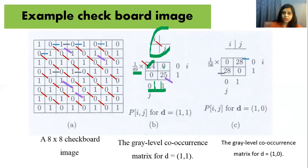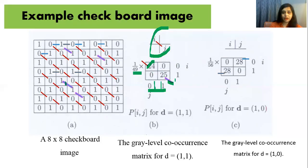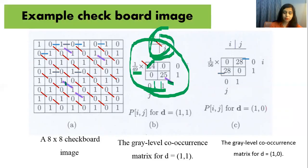For i equals zero and j equals one, there is no such pair, so it is zero. For i equals one and j equals one, counting all pairs shown by the color marks gives 25. This completes the co-occurrence matrix for this 135-degree separation.